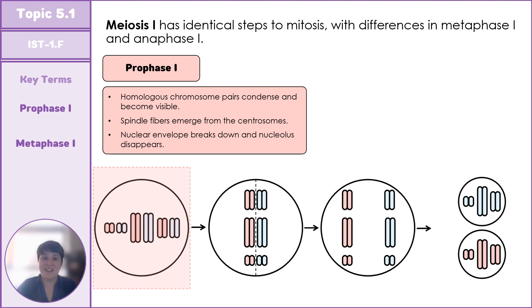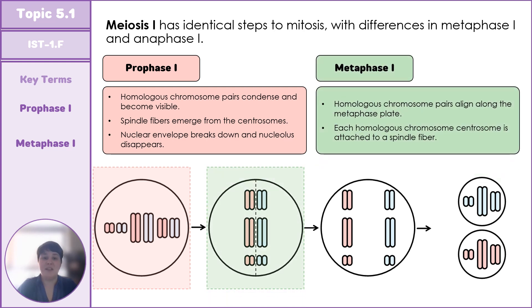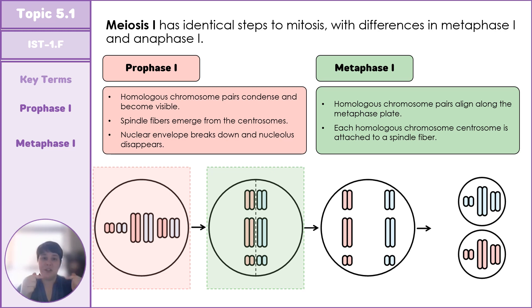During metaphase I, cells align homologous chromosome pairs along the metaphase plate — the equatorial point within the cell. Each spindle fiber attaches to the centromere of a homologous chromosome, positioning them to be pulled apart.